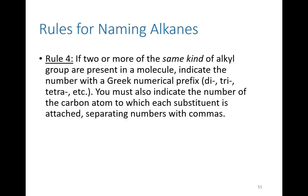Rule four: if there are two or more of the same kind of group present, indicate that using a Greek prefix — di for two, tri for three, tetra for four. So two methyls = dimethyl, three methyls = trimethyl, four propyls = tetrapropyl. You also need to indicate the carbon number to which each substituent is attached, and separate those numbers with commas.